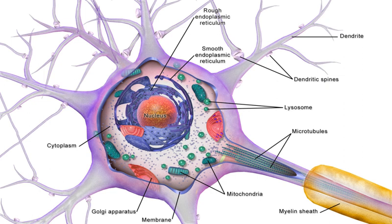The word 'soma' comes from the Greek 'soma' meaning 'body'. Although it is often used to refer to neurons, it can also refer to other cell types as well, including astrocytes, oligodendrocytes, and microglia.